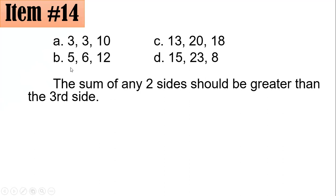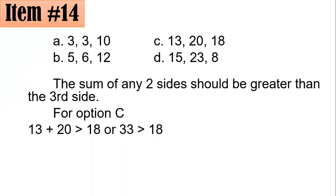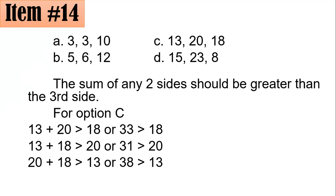Option A is out because 3 plus 3 is less than 10. Option B is out because 5 plus 6, which is 11, is less than 12. For option D, while 15 plus 23 is greater than 8 and 23 plus 8 is greater than 15, we find that 15 plus 8 equals 23, which means it does not satisfy the strict inequality. For option C, 13 plus 20 is greater than 18, 13 plus 18 is greater than 20, and 20 plus 18 is greater than 13. For any pair, the sum is always greater than the third side. Hence, the correct answer is letter C.